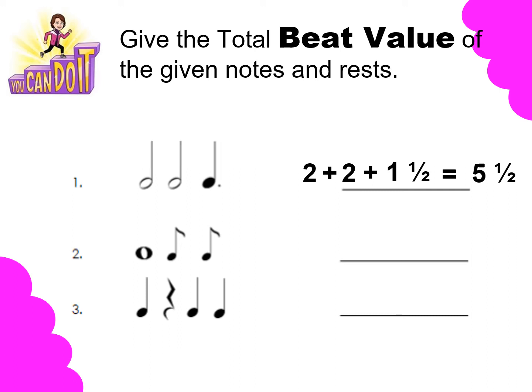Let us proceed to number 2. Number 2 has 3 musical symbols. The first musical symbol is a whole note — the value of a whole note is 4. The second musical symbol is an eighth note, and the value of an eighth note is 1 and 1 half. The third musical symbol is also an eighth note. So you have 4 plus 1 and 1 half plus 1 and 1 half — the total beat value of number 2 is 5.